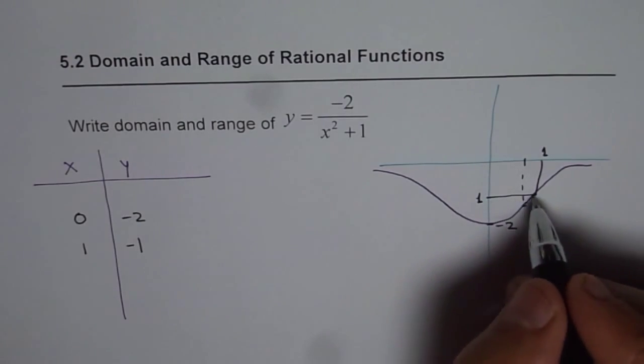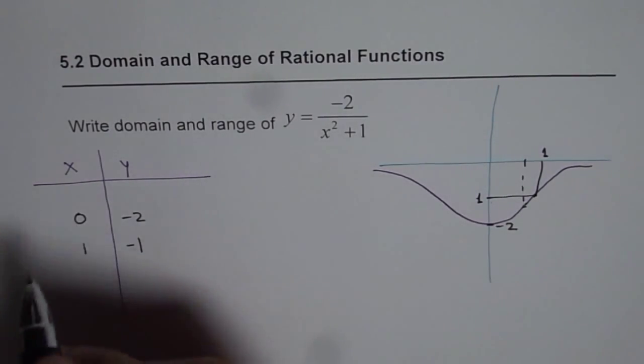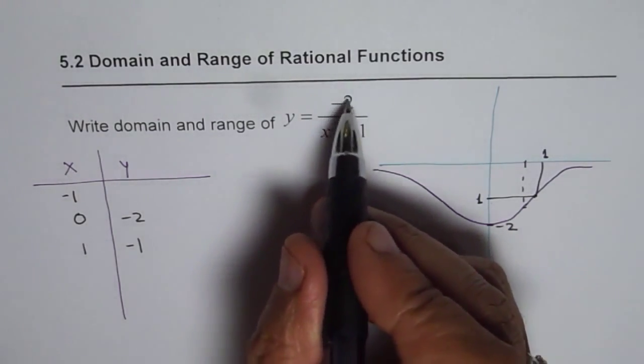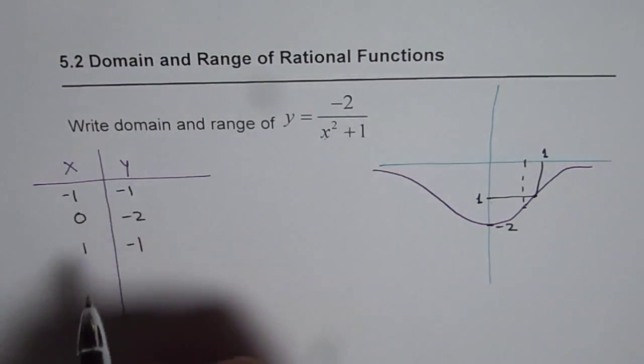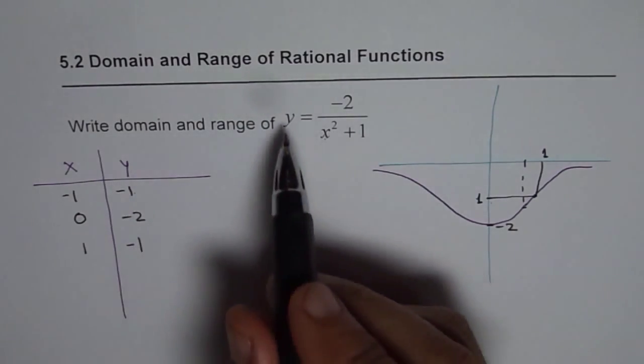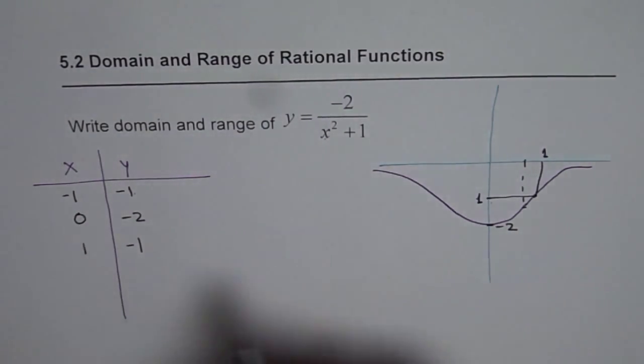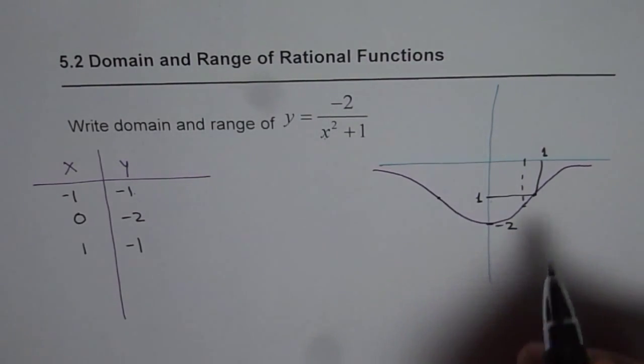So I get that value. Similarly from symmetry if I take minus 1, minus 1 squared is plus 1 so we get minus 2 which will also give me minus 1 as the y value, minus 2 divided by 2. So likewise you can also get other points.